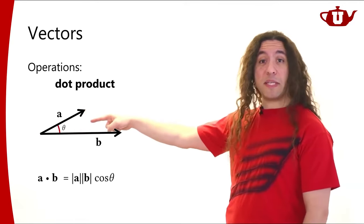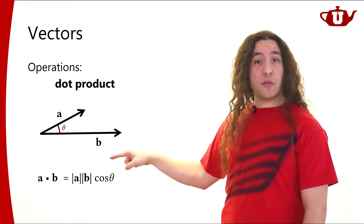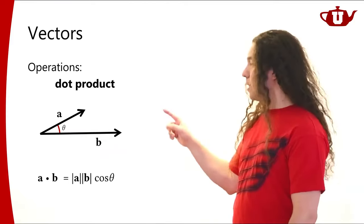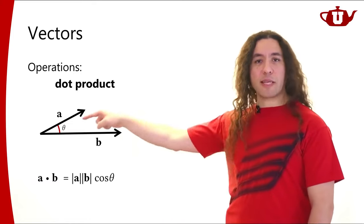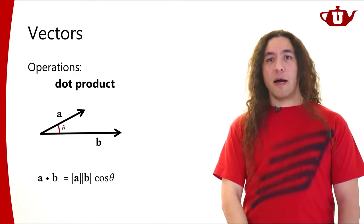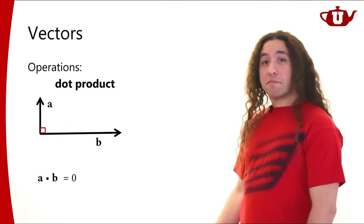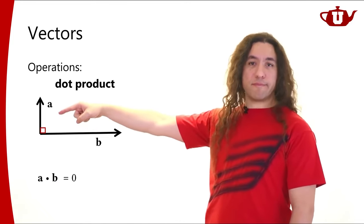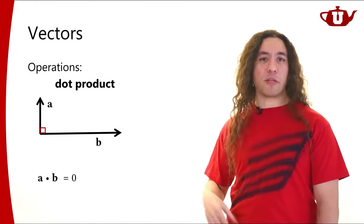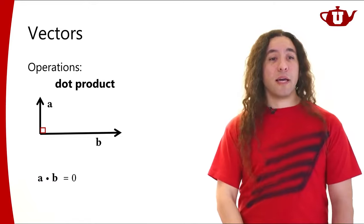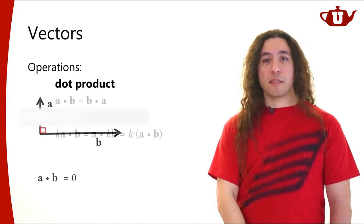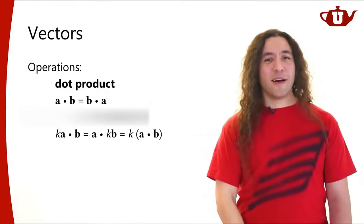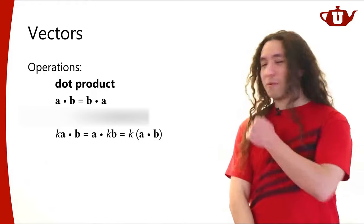If both are unit vectors, the dot product gives the cosine of the angle between them directly. Dot product can also be used to check if two vectors are perpendicular: if they're perpendicular, the cosine of the angle is zero, so the dot product is zero. Properties of dot product include commutativity, associativity, and distributivity.